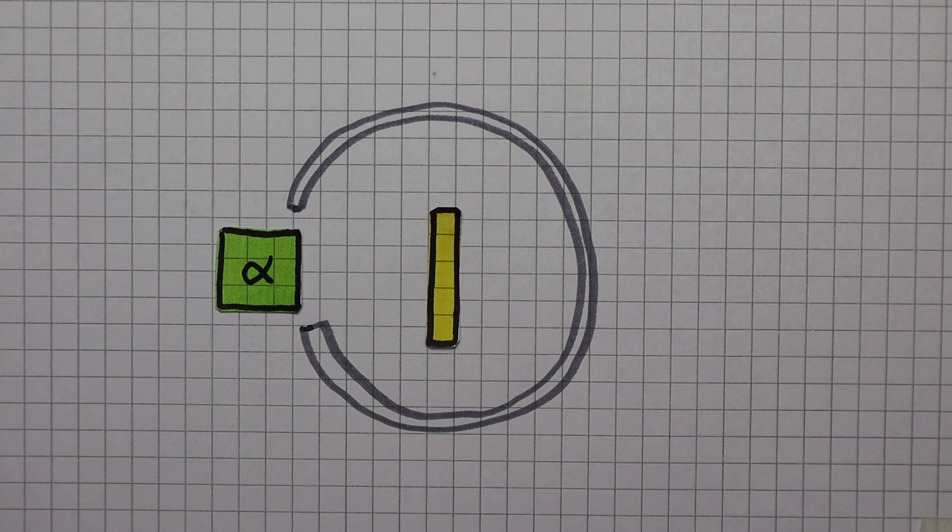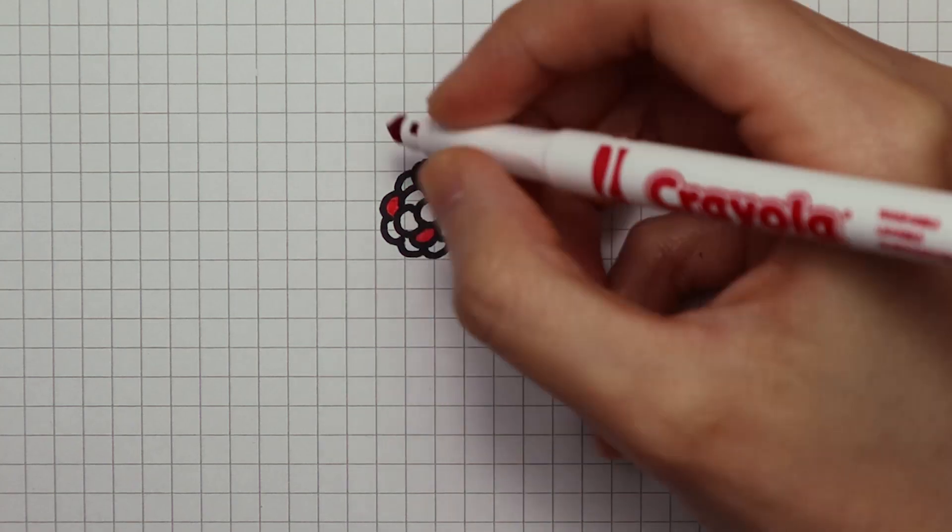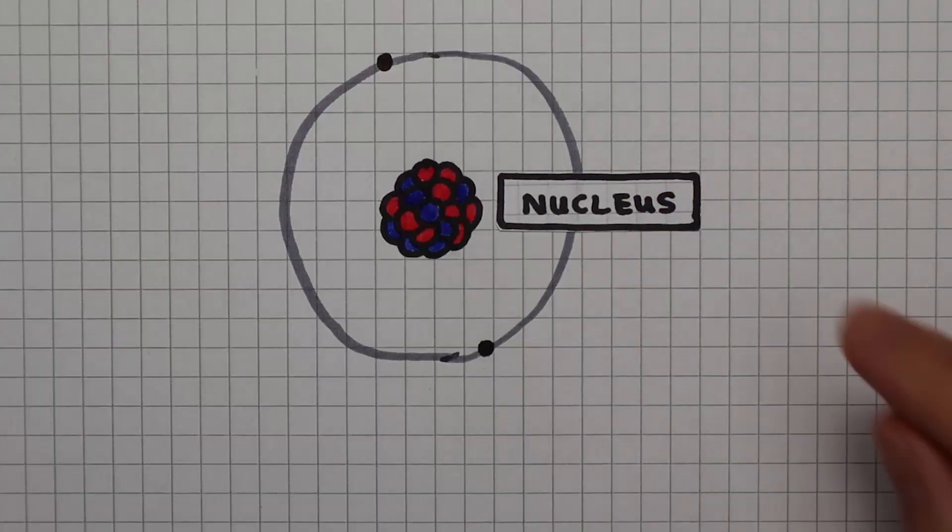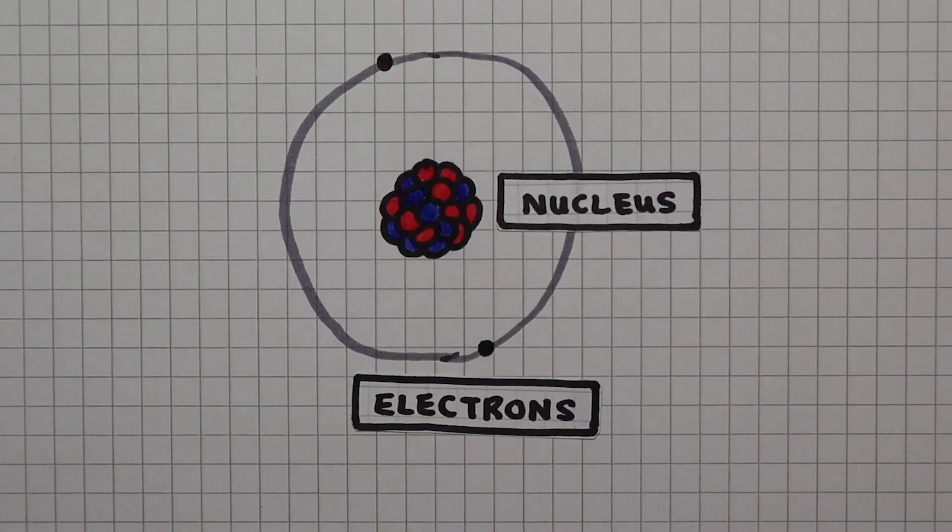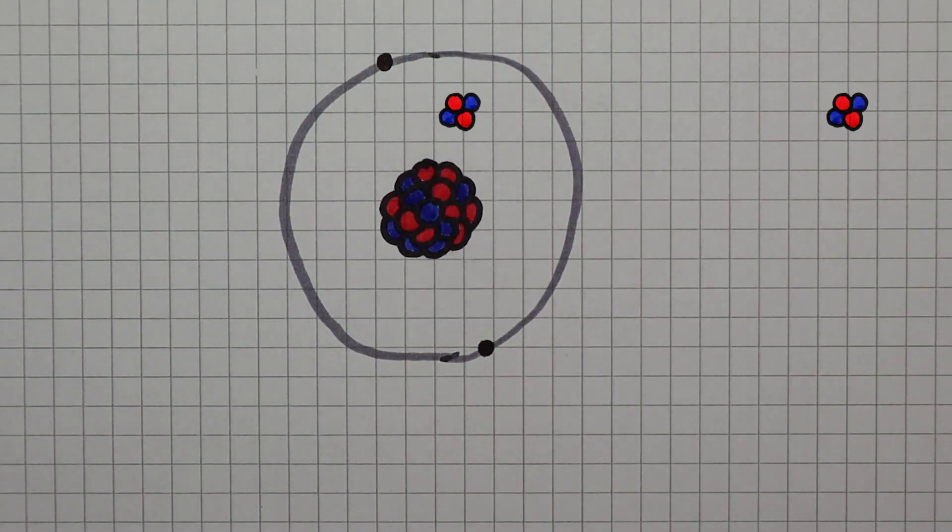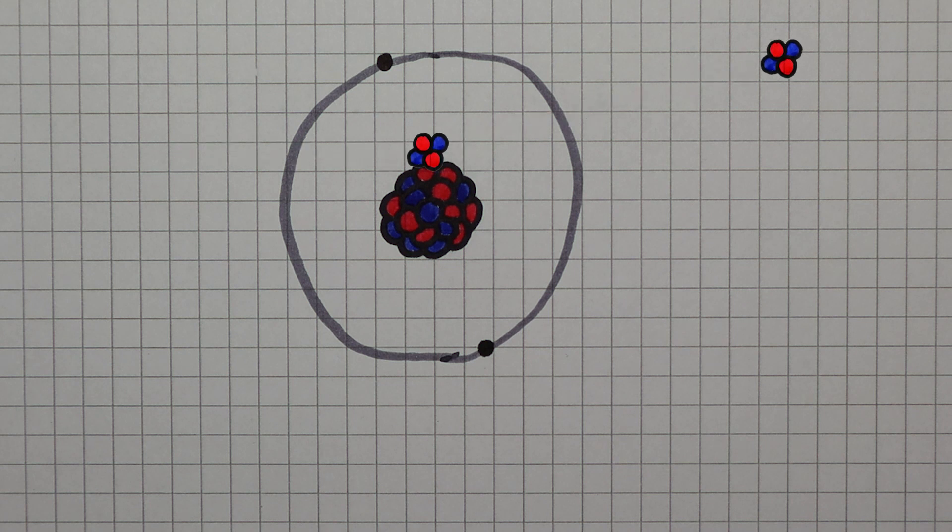His observation can only be explained if an atom looks like this: nucleus in the middle, electrons on the outside, so that alpha particles can go straight through this empty space. Or if it travels close enough to the nucleus, it gets repelled by the positively charged protons.